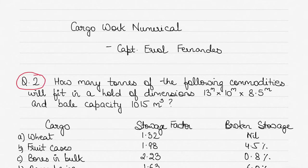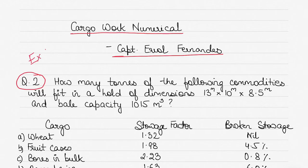Hi everyone, today we take up question number two of the book 'Cargo Work for Mariners'. This is a cargo work numerical; the book is written by Captain Rolf and Landis. This is Exercise One, Question Number Two. In my previous videos I have solved Question Number One as well — you will probably have seen that already.